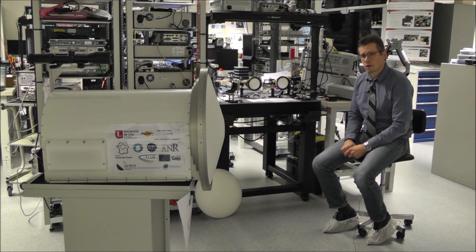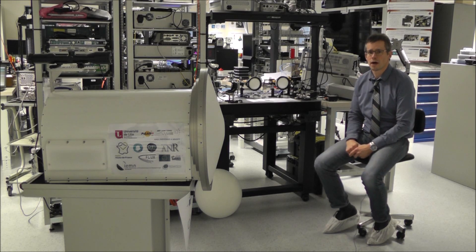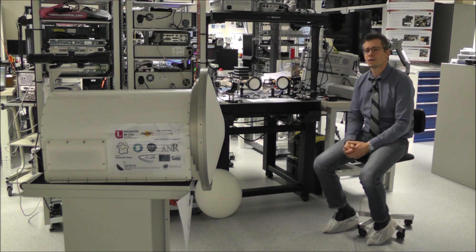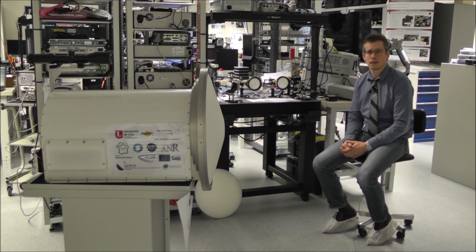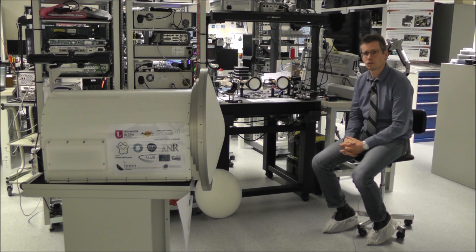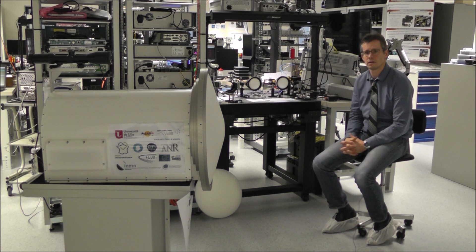And in the THOR project we are going to integrate also tube amplifier to have a much higher power at the input to increase the range of the system. In order to do that we need some high gain antenna. And this is an example of a Cassegrain system at 300 GHz going to be used in this project.